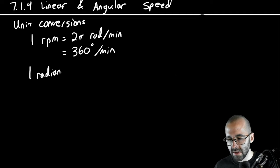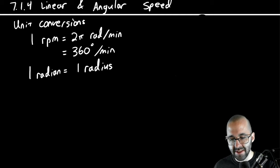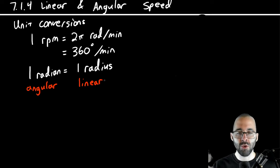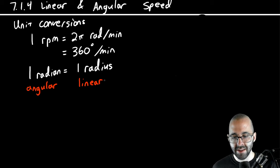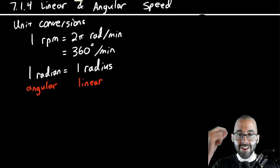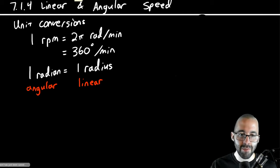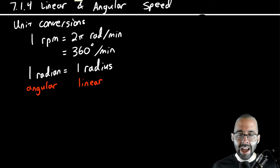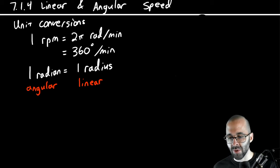The other key relationship to remember is that one radian equals one radius. One radian is for angular measurement, and one radius translates it to linear measurement. So if we have something in terms of radians per something, using this relationship converts it to length — inches, miles, feet, meters, etc. This is how you convert from angular to linear.